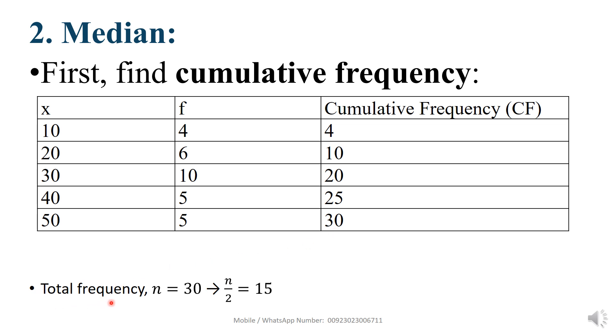Total frequency, n equal to 30, and divide by 2 equal to 15. It means middle value is 15. Now, you can see here, here is given 10, here is given 20. It means 15 lies in this number. It means this lies 15. Now, you can see here, 30 is a median.